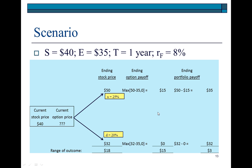If, on the other hand, the stock goes down from $40 to $32, then the option is out of the money. Its intrinsic value is zero. The option payoff at the end of the one period is going to be either $15 if it is in the money, or zero.